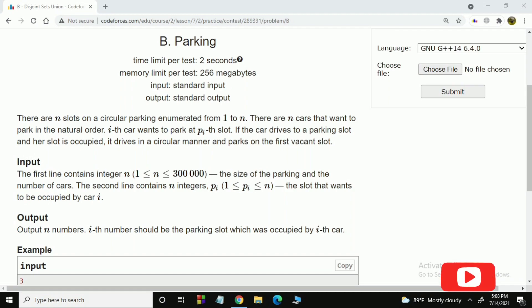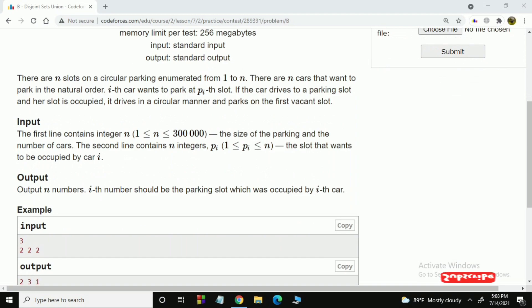In this problem, there are n slots on a circular parking enumerated from 1 to n. There are also n cars. Each car x wants to park in some given position px. If that position is already filled up by some other car, then it tries to find the nearest position in the circular way.